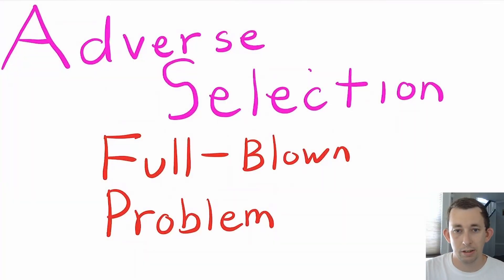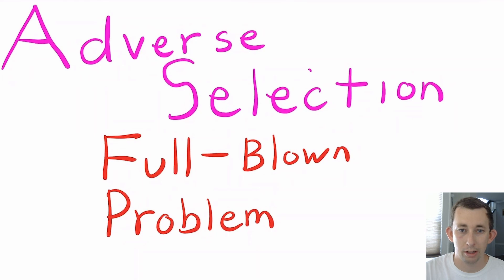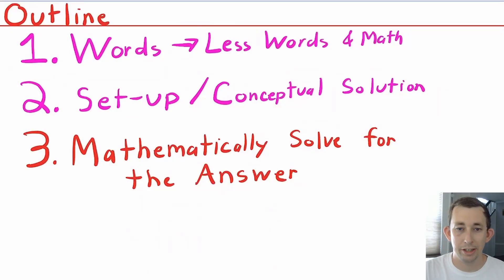Hi guys, welcome back to In Case of Econ Struggles, and welcome to another micro struggle. Today we're talking about adverse selection more in depth — specifically we're going to do the full mathematical problem for an adverse selection problem. In a previous game theory video I talked about the game tree for an adverse selection problem and signaling, and I've also talked a little bit about the individual rationality and incentive compatibility constraints, but now we're going to go all the way through a full-blown problem with the math.